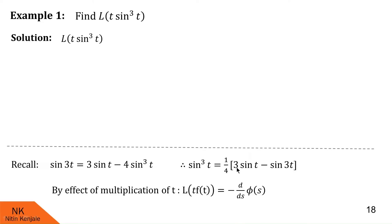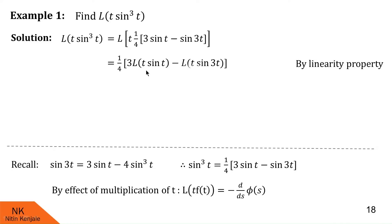Now I replace sine cube t with this expression. So we get Laplace of t into 1 by 4, 3 sine t minus sine 3t. We apply linearity property and write this as 1 by 4 goes outside, 3 into Laplace of t into sine t minus Laplace of t into sine 3t. Now we have to find out Laplace of t sine t and Laplace of t sine 3t.